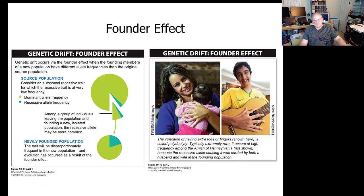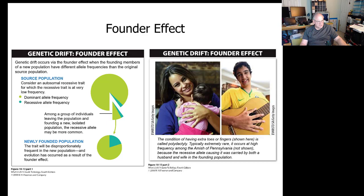The founder effect is another genetic drift concept. Genetic drift occurs via the founder effect when a founder member of a new population has a different allelic frequency than the original source population. They break away and form their own newly founded population, and the founder effect brings those genetic characteristics to bear, leading to new characteristics being expressed.